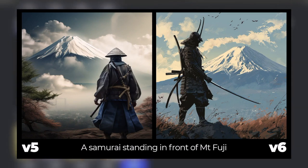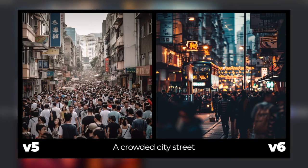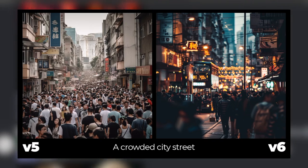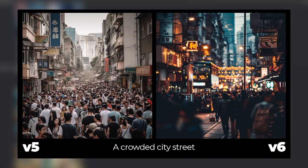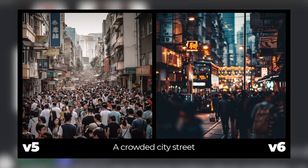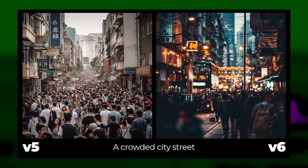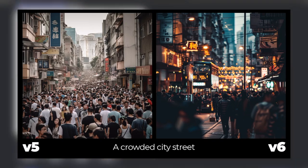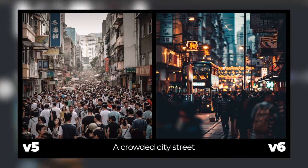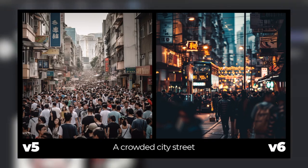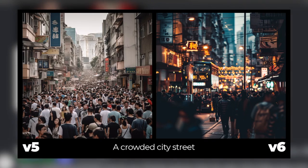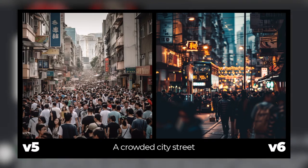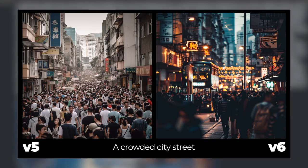A crowded city street now — version 5's streets look good, but they all look a little too symmetrical, whereas the version 6 image on the right looks like a legitimate photograph. It really looks like I could show that to someone and they would have no idea it was created with AI. It's just a little bit more detached from that artificial look.